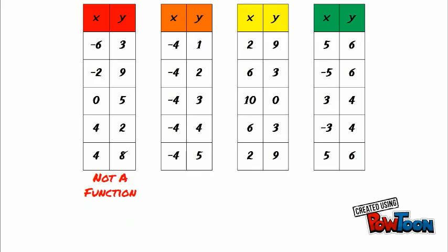Four is paired with 2, but then 4 is paired with 8. Four can't be paired with more than one output, so that one's not a function. The second table is also not a function.